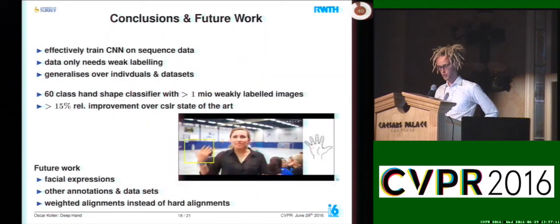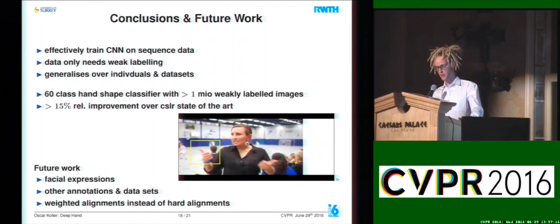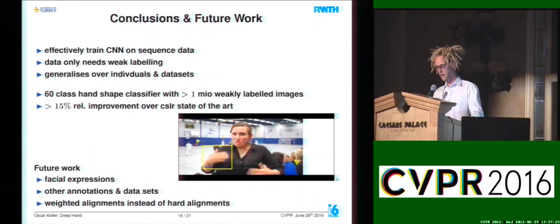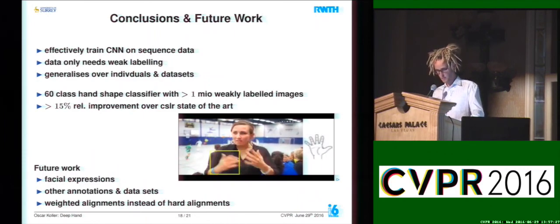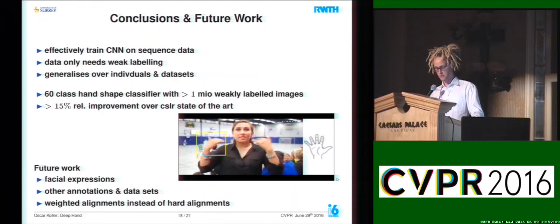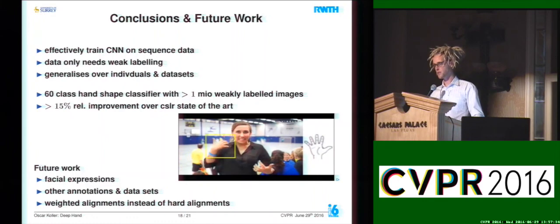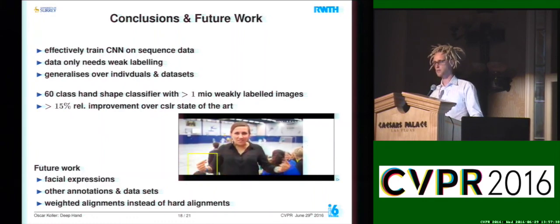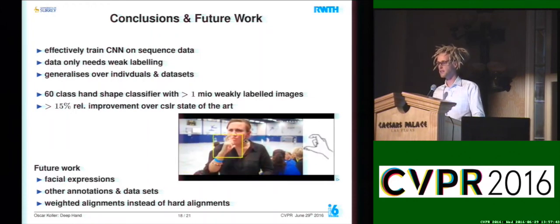In conclusion, we effectively trained a CNN on sequence data using only weak labeling, and it generalized over individuals and datasets. An example on a completely unseen video still performs quite reasonably. We achieved 15% relative improvement over the state of the art. For future work, we'd like to look at different modalities and incorporate weighted alignments instead of the hard alignments currently used to train the CNN. Thank you very much.